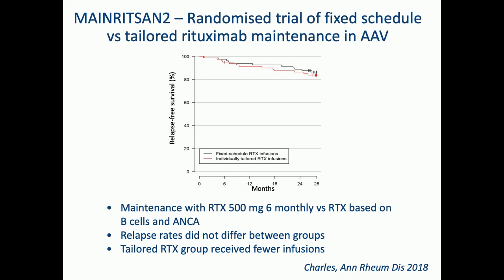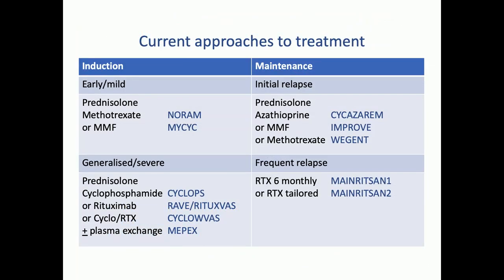To summarise current approaches: prednisolone with methotrexate or MMF; prednisolone with cyclophosphamide or rituximab — although there's no evidence that rituximab alone works in severe renal disease — or the combined cyclophosphamide and rituximab approach. For patients with dialysis-dependent disease or alveolar haemorrhage, we are currently still using plasma exchange, and I think you should wait until the PEXIVAS paper is published before you change your practice. For maintenance: azathioprine, MMF or methotrexate, or rituximab regularly or in the tailored approach.